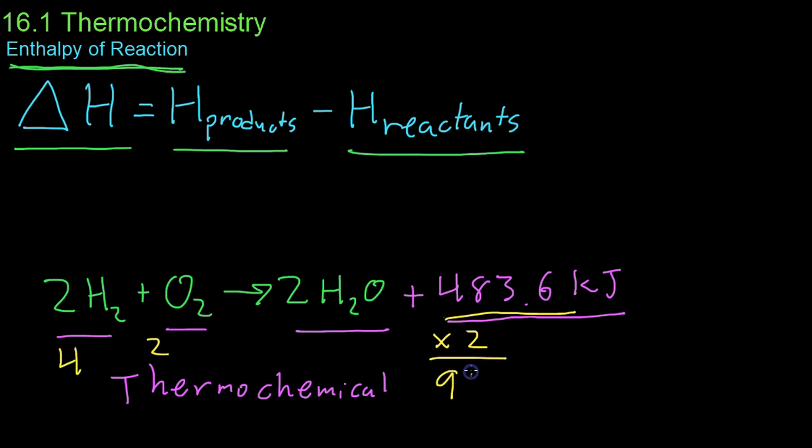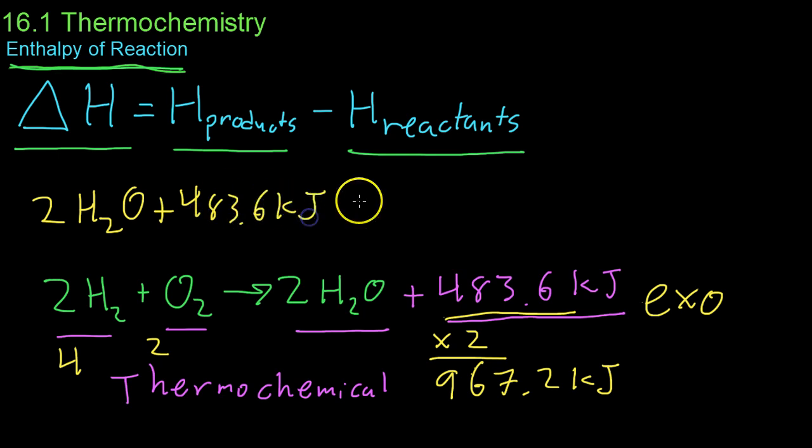Because this releases energy as a product over here, this is what is known as an exothermic reaction. So if you were to reverse it, in other words if you were to take 2 moles of water and add 483.6 kilojoules to the system through electrolysis or what have you, you could decompose it into 2 moles of hydrogen and a mole of oxygen. And that would then be an endothermic process because it requires energy to take in.